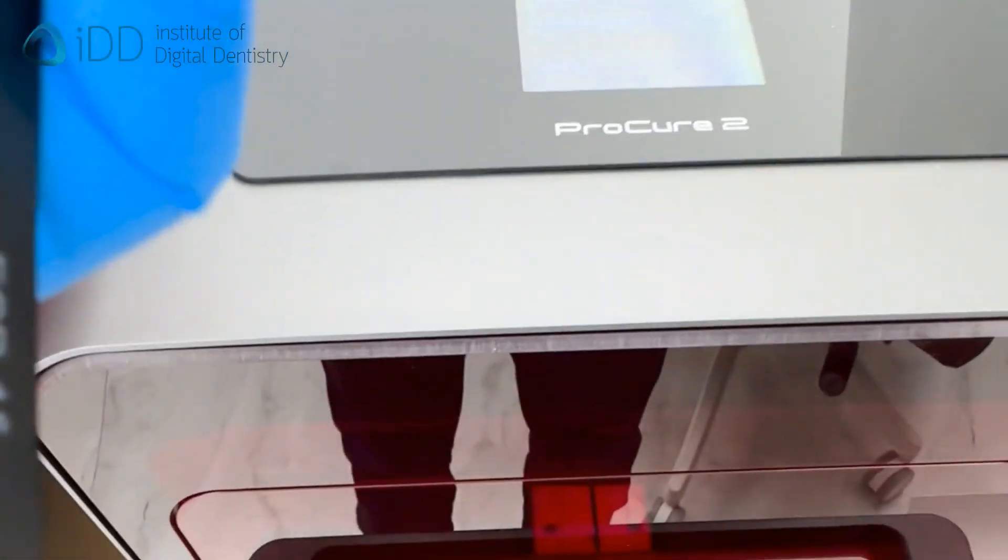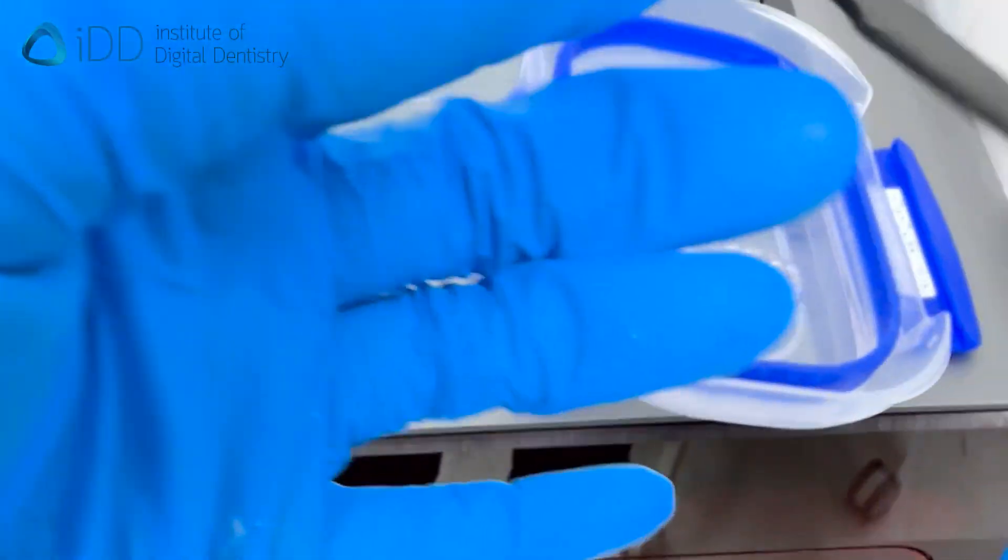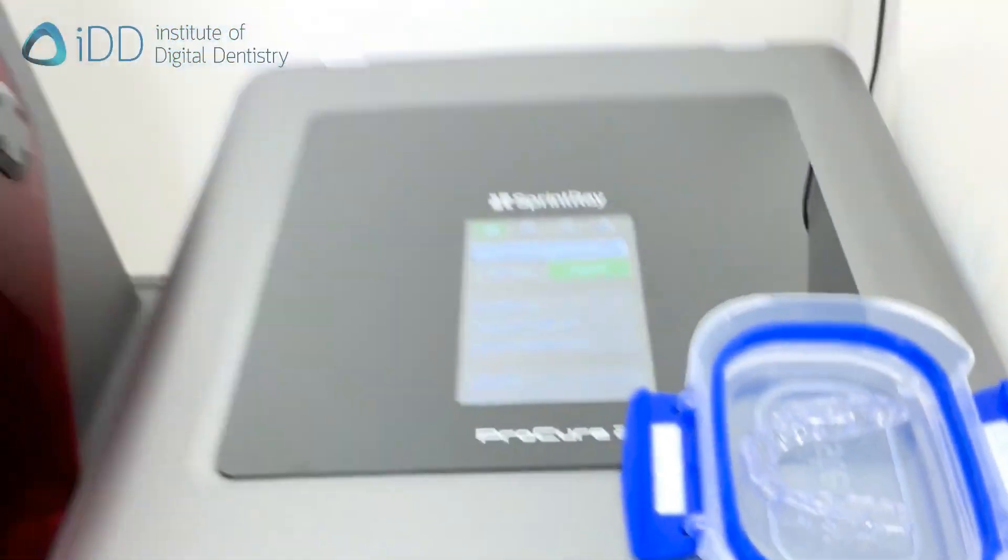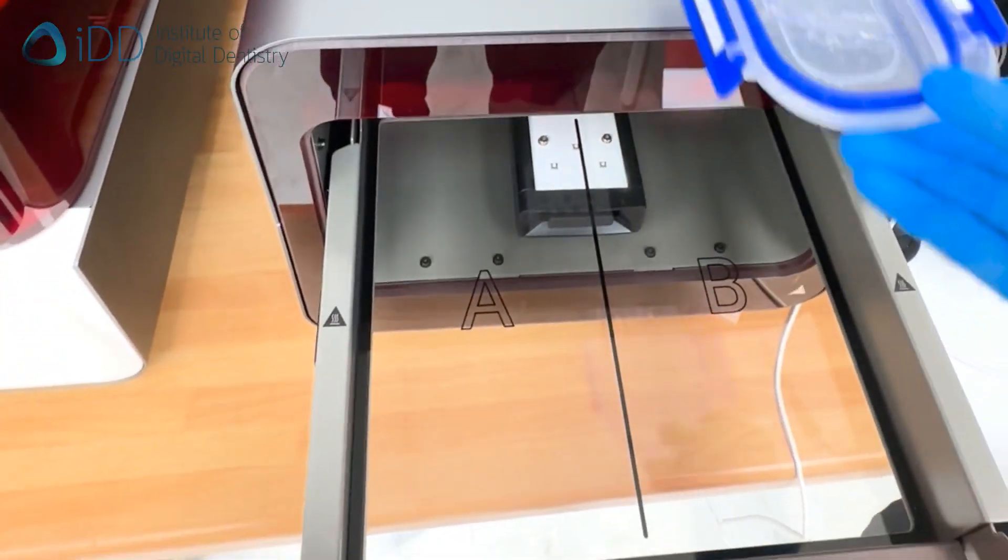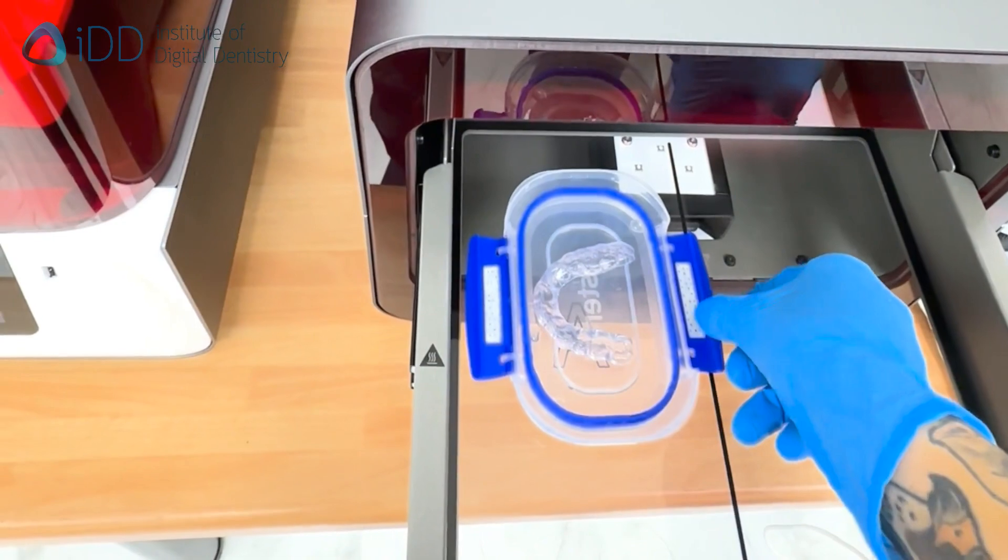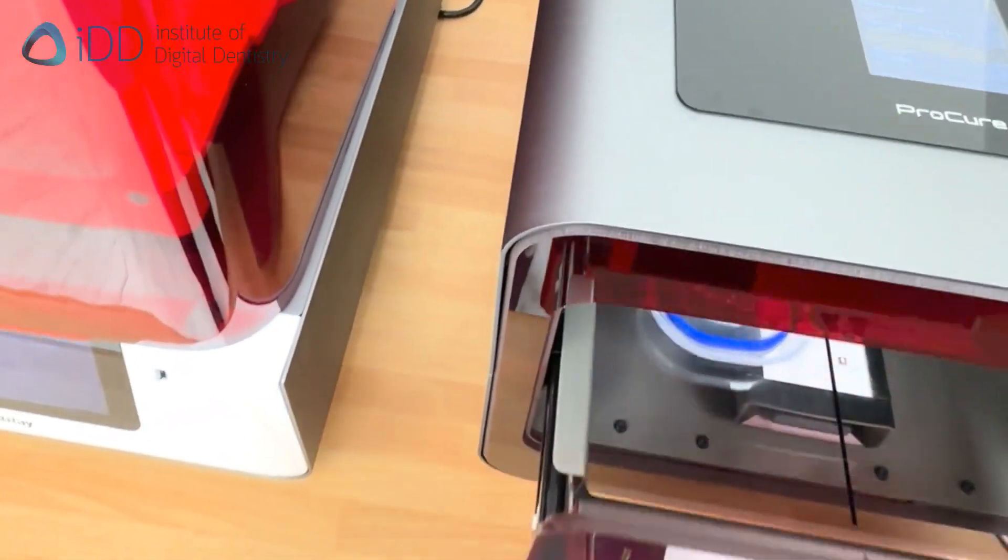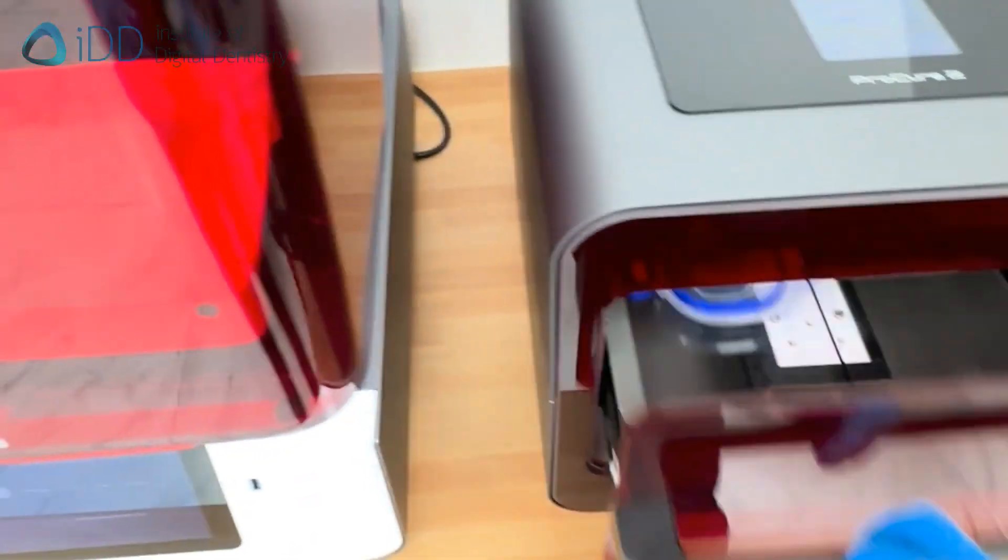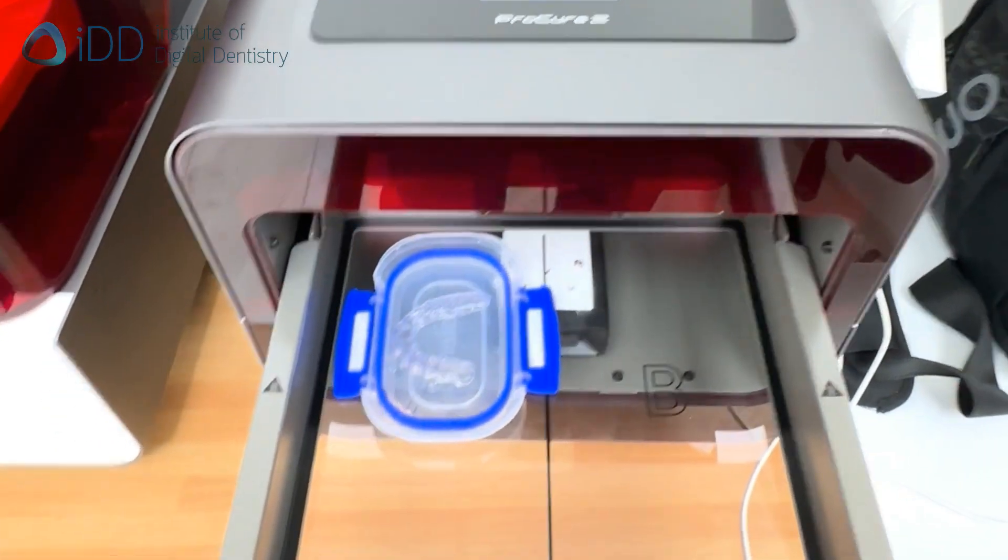Then we can do the final cure. Very carefully, I place the splint in a transparent lid and place it inside the curing machine. This particular curing machine already has the presets for the resin we've printed. Note that each resin will have a different preset or required settings.